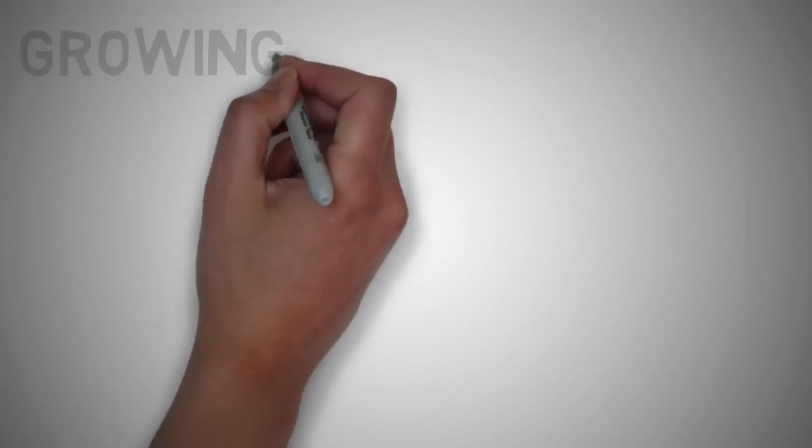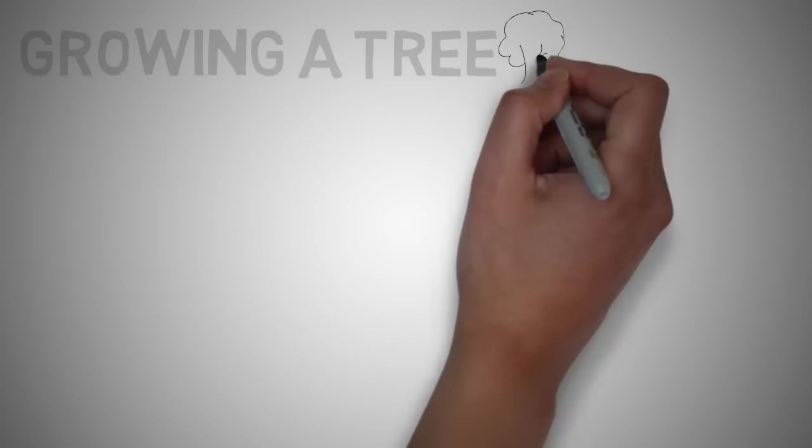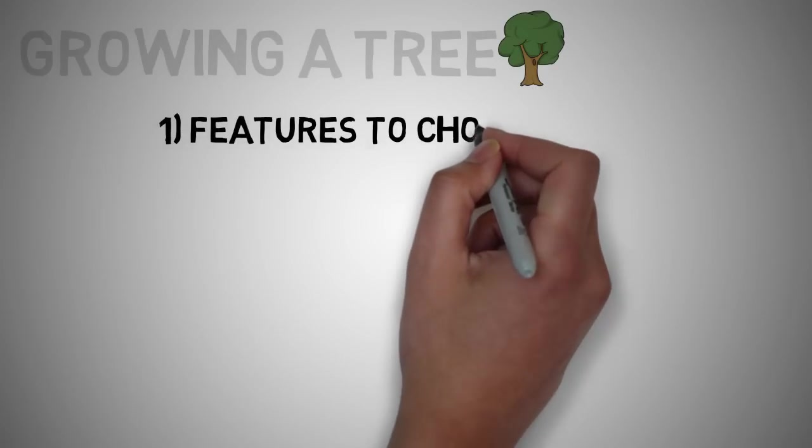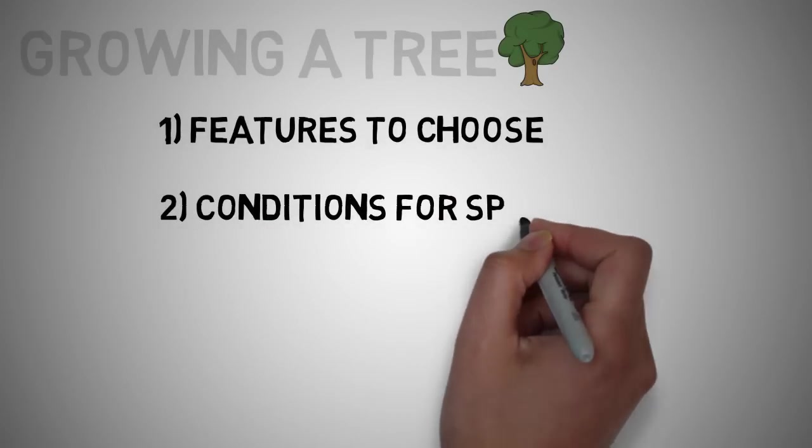What's actually going on in the background? Growing a tree involves deciding on which features to choose and what conditions to use for splitting, along with knowing when to stop.